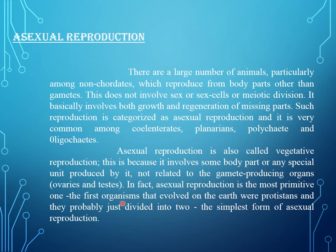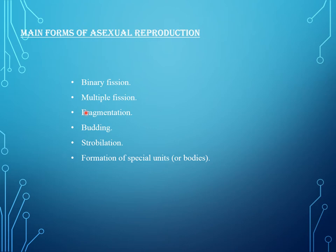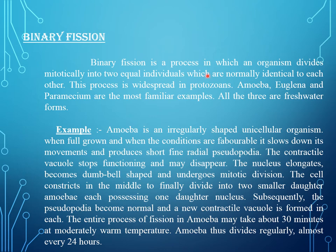Asexual reproduction is the most primitive one. The first organisms that evolved on earth were protists and they probably engaged in the simplest form of asexual reproduction. Main forms of asexual reproduction are: binary fission, multiple fission, fragmentation, budding, strobilation, and formation of special units or bodies.